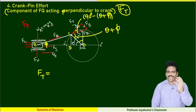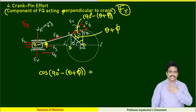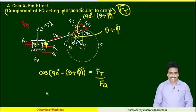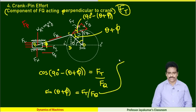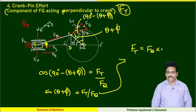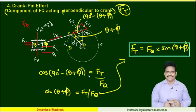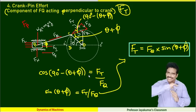Knowing FQ, how can I find FD? We know that cos(90 − x) = sin(x). So this becomes sin(theta + phi) = FD / FQ. After further processing, FD = FQ × sin(theta + phi). This is the force component perpendicular to the crank.